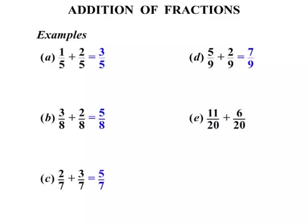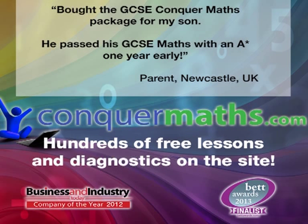The next one: 11 twentieths plus 6 twentieths. Well, we're dealing with twentieths, so our answer will be in terms of twentieths. We have 11 plus 6 equals 17. So our answer will be 17 twentieths.